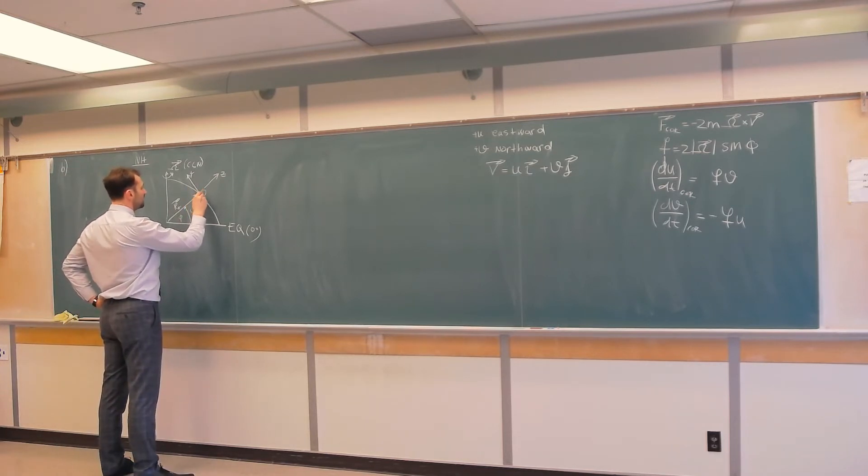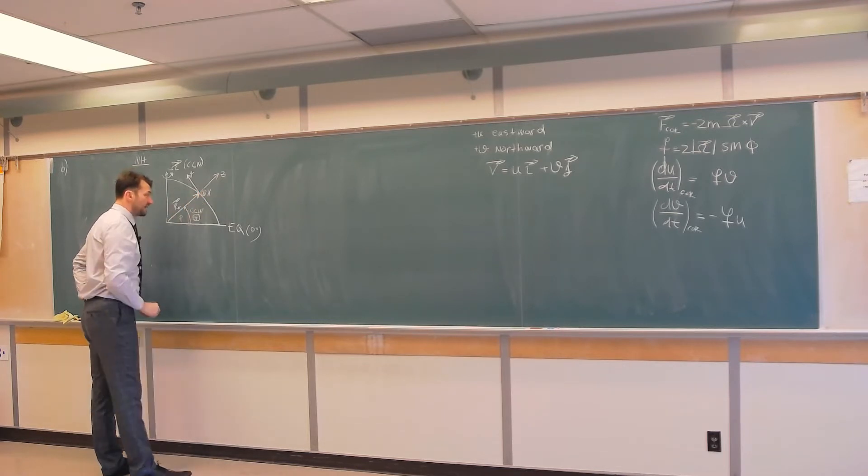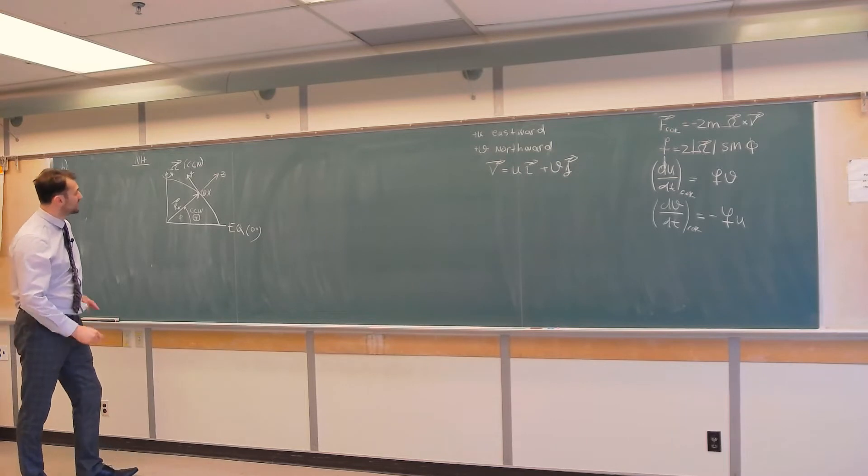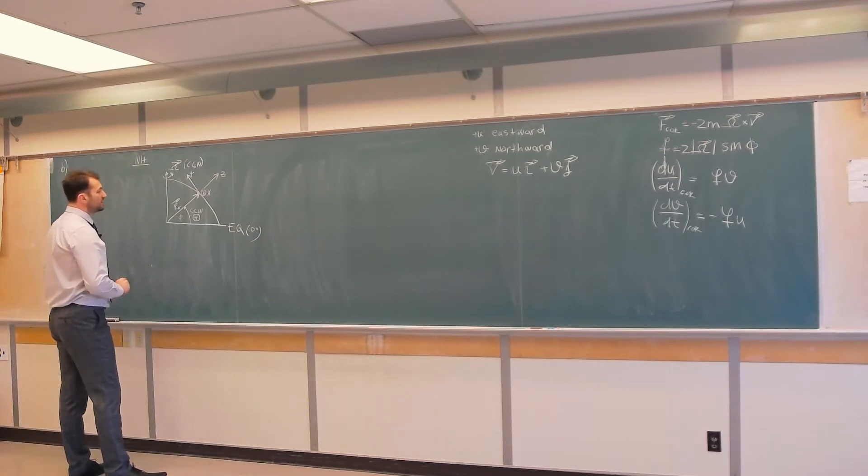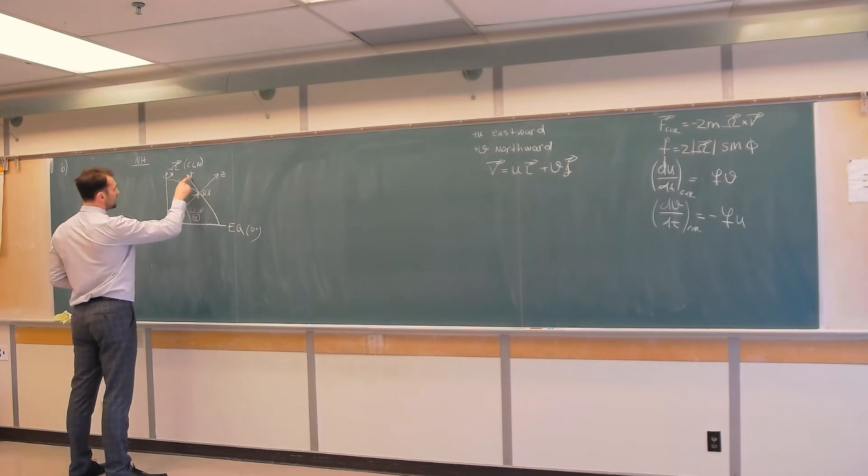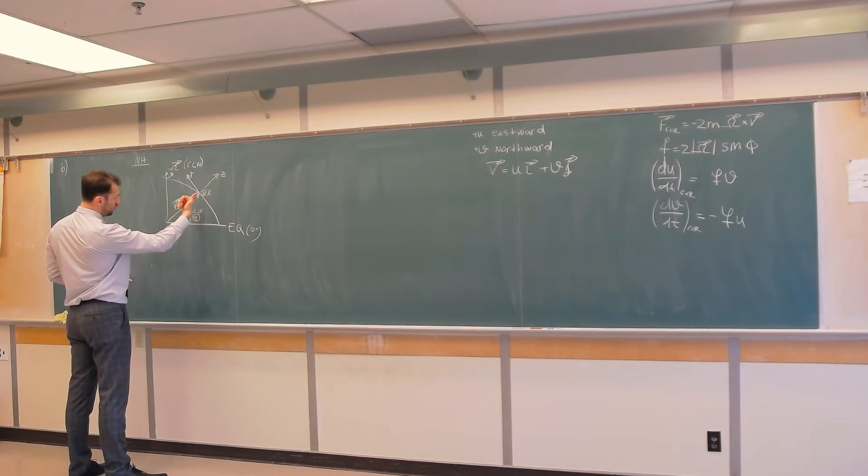So we usually put this symbol, which means the vector is into the blackboard, and that would be x. And this makes sense because this is a right-handed coordinate system. When I cross x and y, I should get z. And indeed, when I cross these two, I get z.